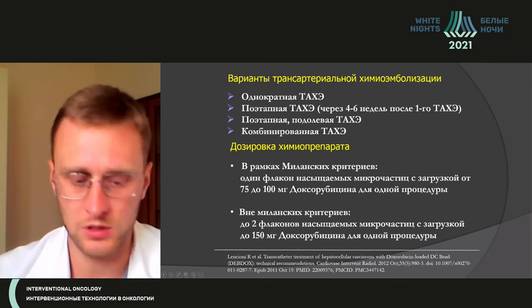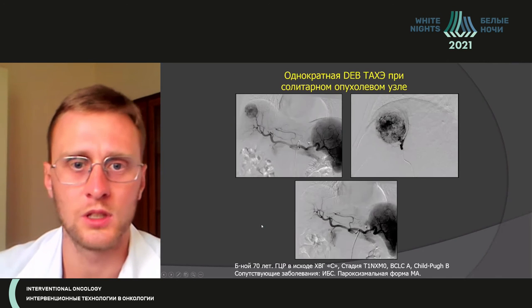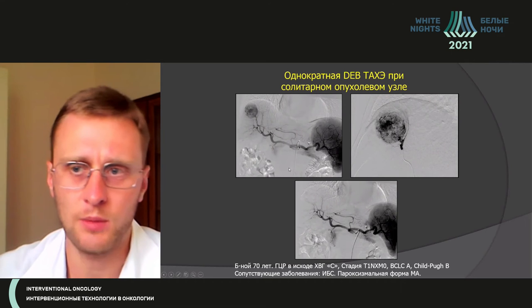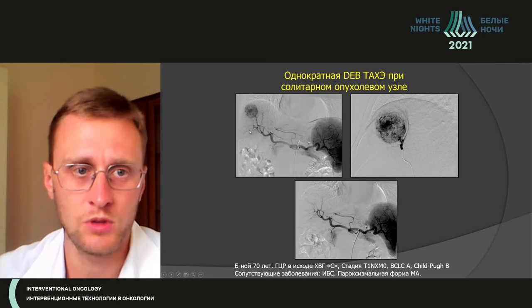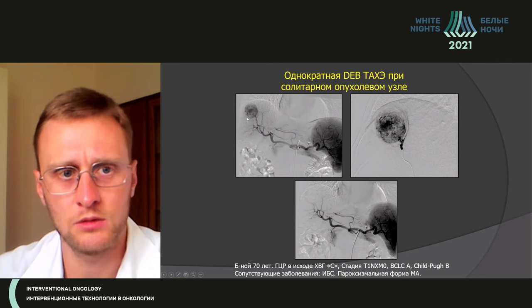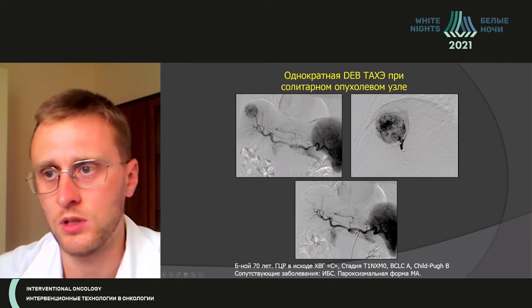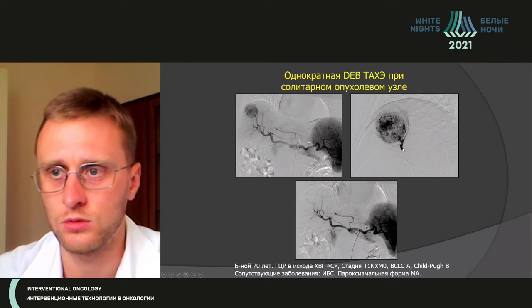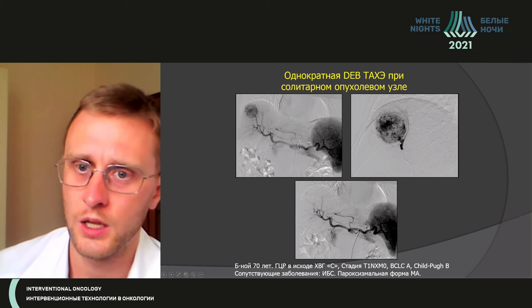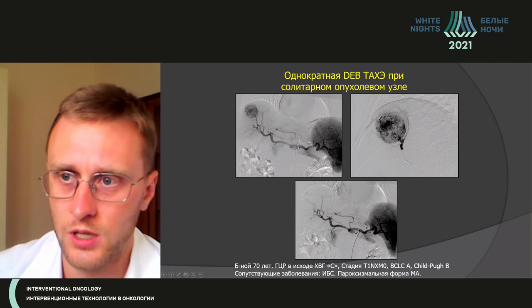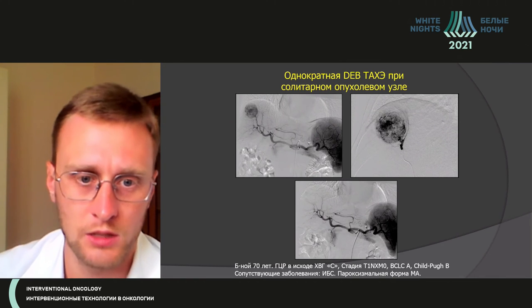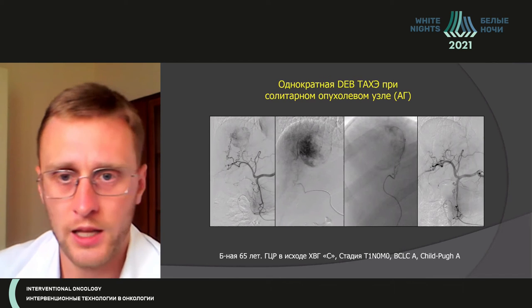If the tumor is outside the Milano criteria, then up to two vials per procedure may be used. That is the example for one stage of TACE in a solitary tumor node, and embolization is performed quite effectively.